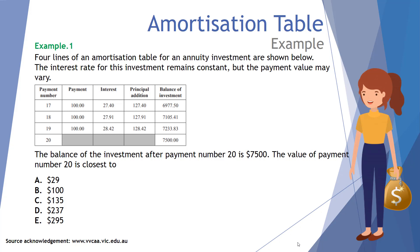Let's now look at a couple of examples from VCAA exams. Example one: four lines of an amortization table for an annuity investment are shown, covering payments 17 through 20. The interest rate remains constant but the payment value may vary. The balance after payment 20 is $7,500. We want to find the value of payment 20, choosing from five options.